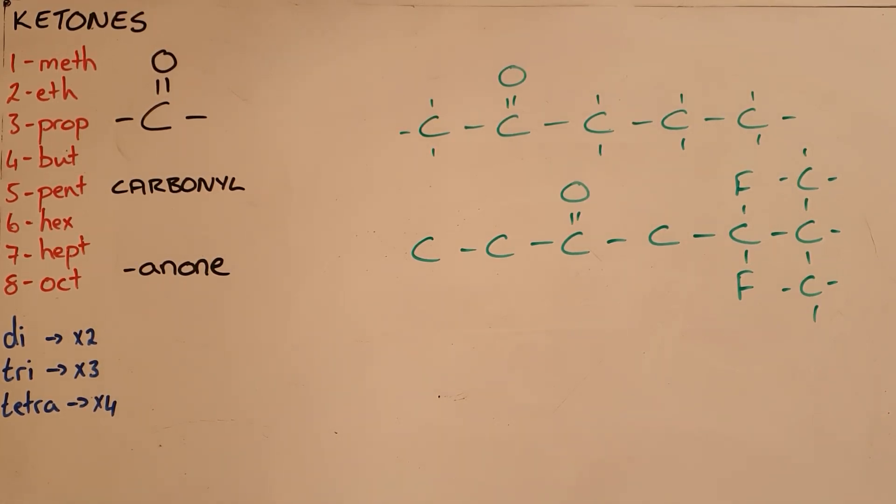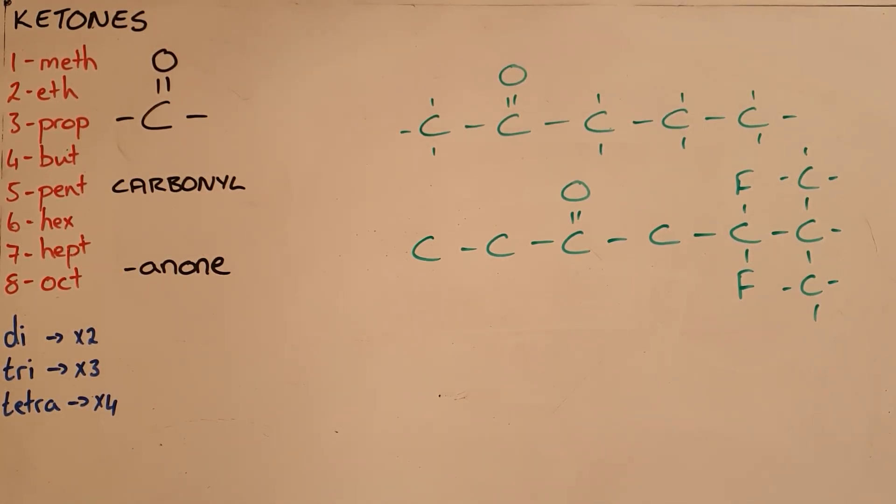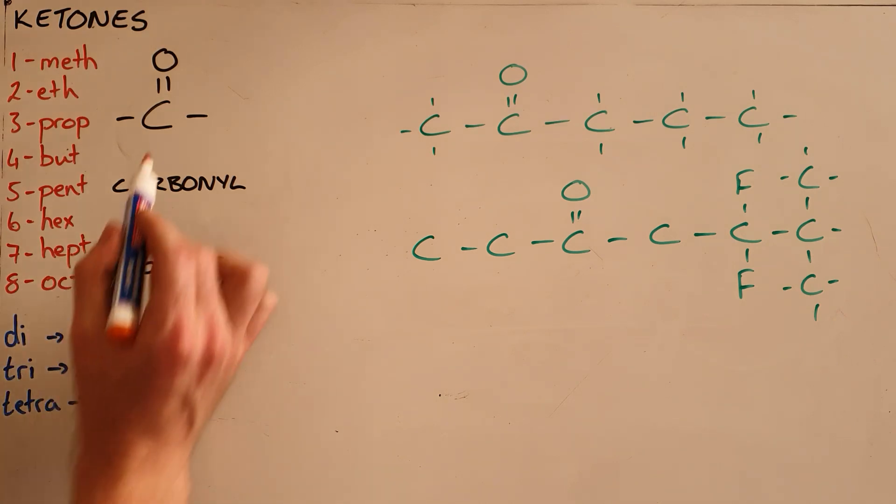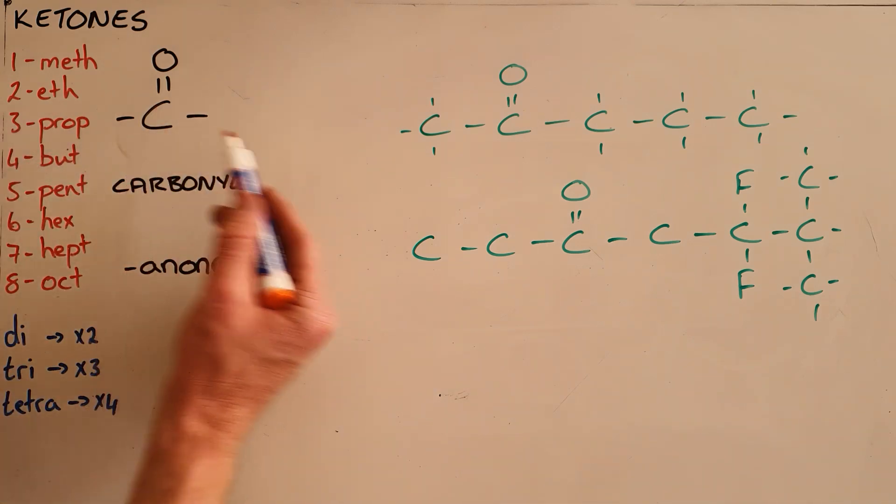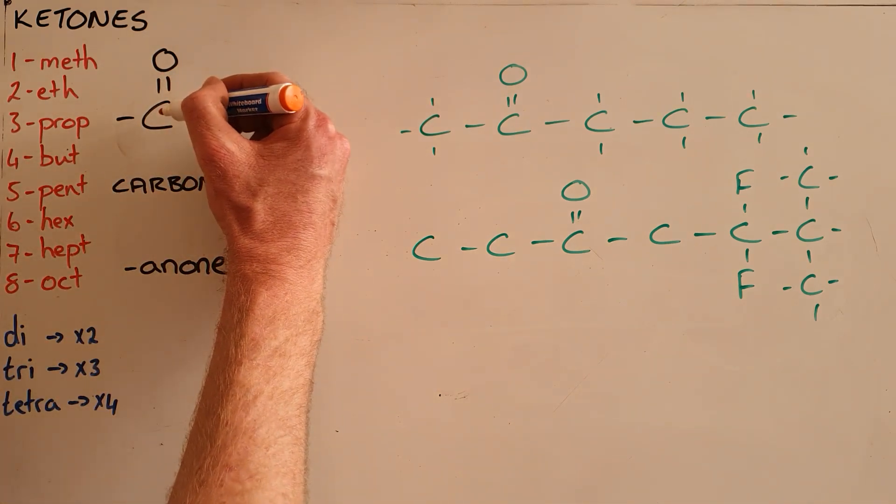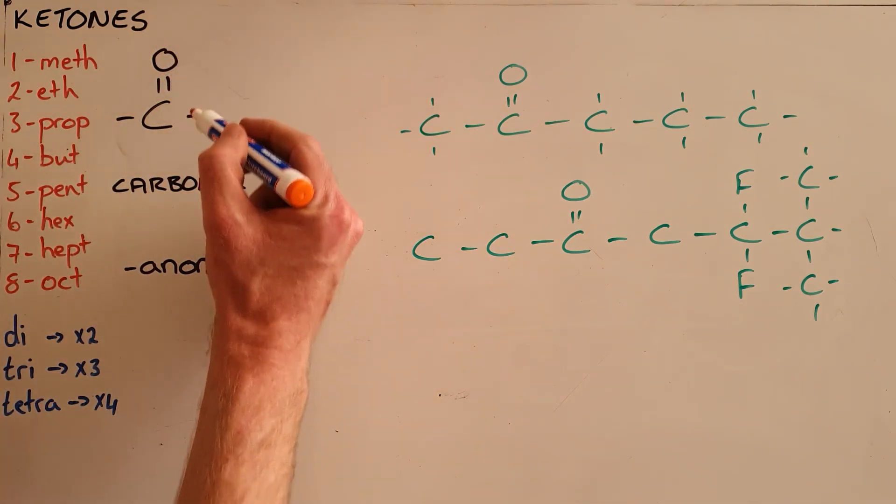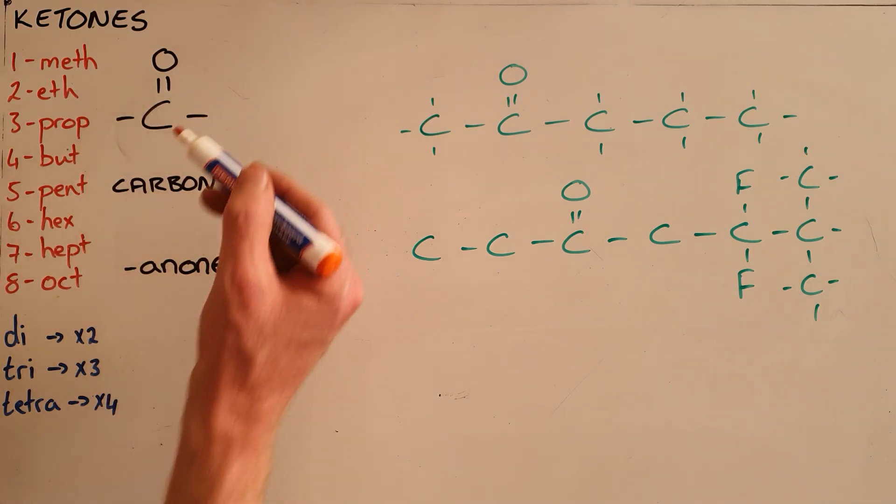Ketones are compounds that contain what is called a carbonyl functional group, which is very similar to the functional group of aldehydes. The difference is that the carbonyl functional group allows for the carbon chain to extend on either side of it, where we have a carbon double-bonded to an oxygen with carbons attached on either side.